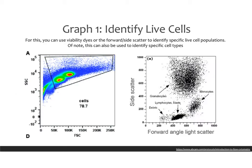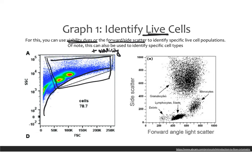There are a few gates that are very common to draw. The first one people usually draw is to identify live cells, which can be done with a viability dye — you would take all cells positive for your viability dye against your unstained control. Or you can use forward and side scatter, because cells scatter based on size and dead cells are usually a different size than live cells. If you do it based on scatter, you'll see sort of this arc shape, and it's the top of the arc that contains all your live cells. You'd identify your live cells by scatter and say, for example, 78% of my cells are live.